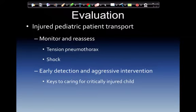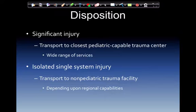Evaluation: monitor and reassess the injured pediatric patient during transport, especially if there has been any compromise to the ABCs. Continuously monitor for tension pneumothorax, shock, or anything of that level, reassessing every two minutes. Early detection and aggressive intervention are the keys to caring for the critically ill child. For disposition, transport significant injuries to the closest pediatric-capable trauma center. Isolated single-system injuries may be transported to non-pediatric trauma facilities depending on regional capabilities.